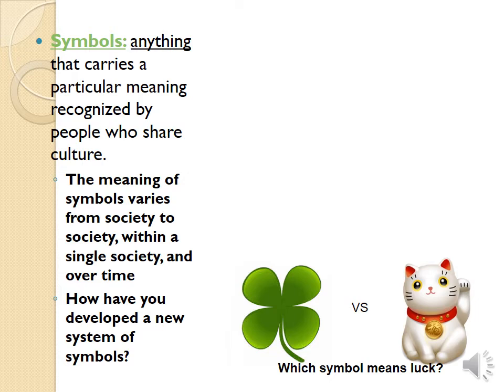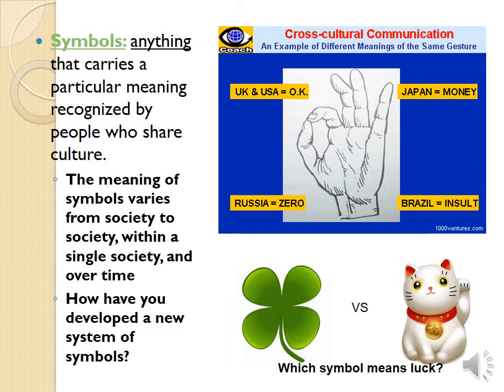You guys have developed an entire system of symbols — maybe even the generation that slightly predates you talks very effectively in symbolic language, and I don't mean letters, I mean emojis. You've constructed an entire system of symbols to allow you to communicate. We'll spend a little bit of time in class looking at how symbols can be misinterpreted. The okay sign in the 1980s here in the United States — in Russia that symbol means you're telling someone there is zero, in Brazil it's an insult, in Japan it's a symbol for money.